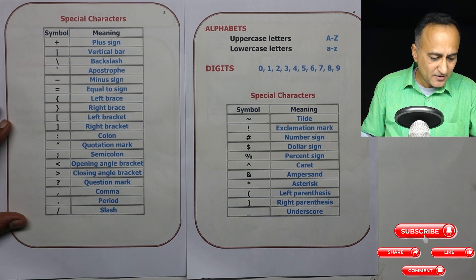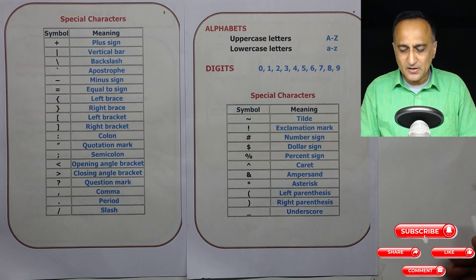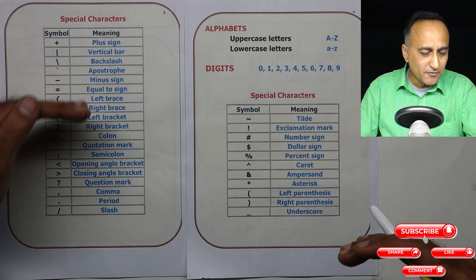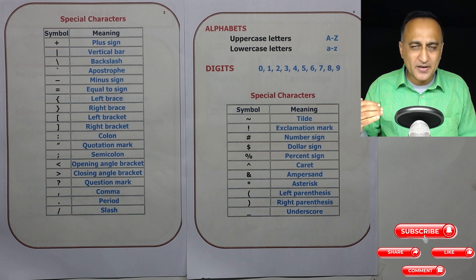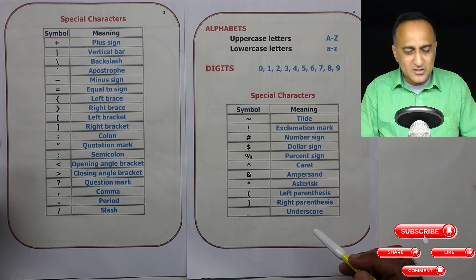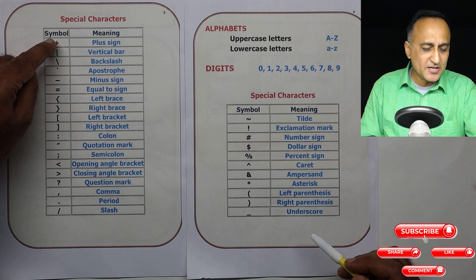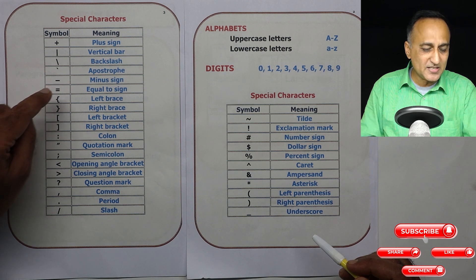There are a number of special characters permitted in C programming language, which you can see on the right-hand side. It is not necessary — and also impossible — to explain the meaning of each character right now. As we progress learning data types, operators, functions, pointers, and so on, all of these special characters will be used. For example, this character stands for addition; this stands for the minus sign; this stands for assignment, or double equals for equality.